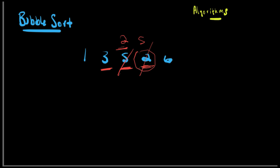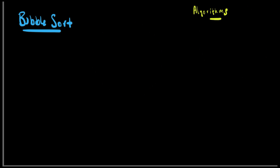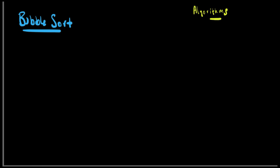Now let's actually do the whole process with an actual array. I'm going to erase this and make an array. Let's do two, five, three, seven, one. Let's not make this too long — I don't want to make this video too long because I have to reiterate over the whole process and I'll show you how that's going to happen.